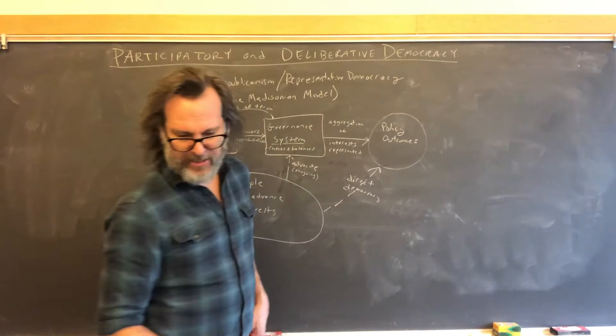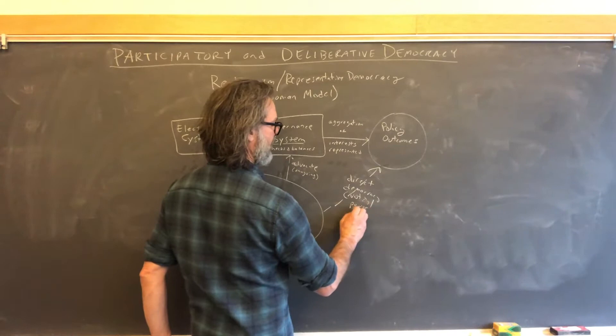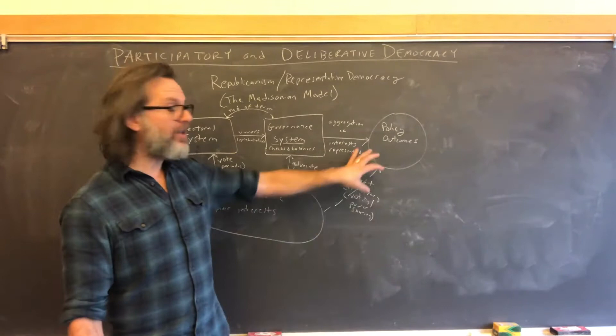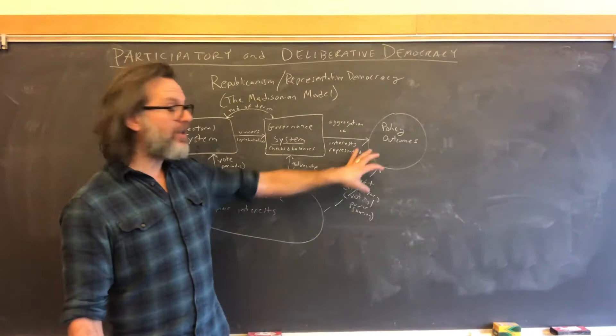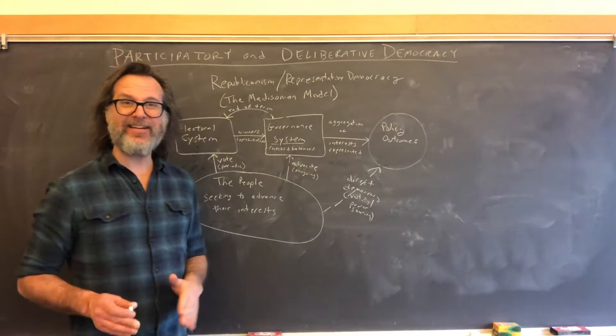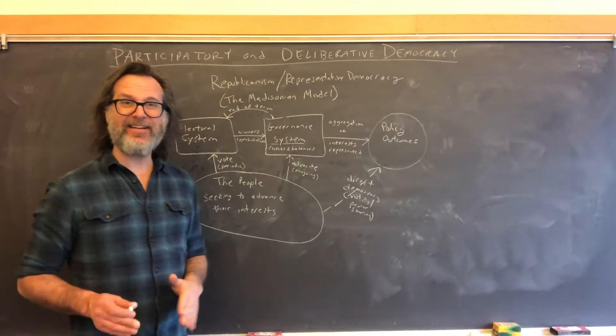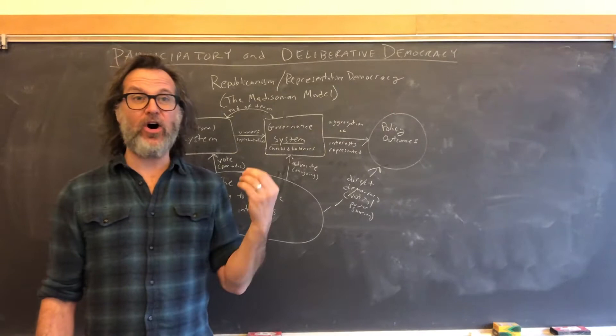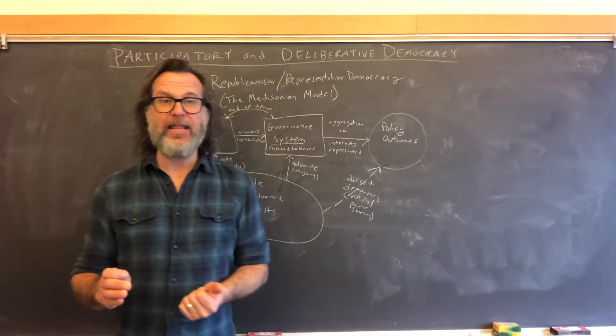Direct democracy is where the people get to share power. It's a form of both voting and power sharing. We don't have this at the national level in the United States, but about half the states do — here in Oregon, for example, policy-making power is shared between the system of governance and the people themselves. Either one can get a policy outcome. Note that this is still a relatively thin nexus — it's still voting, still periodic, still limited to a narrow number of questions, usually just yes or no.